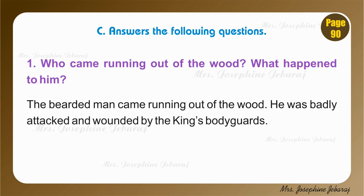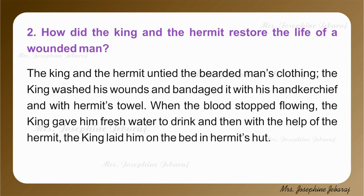Moving to C. Answer the following questions on page number 89. Question number 1. Who came running out of the wood? What happened to him? The bearded man came running out of the wood. He was badly attacked and wounded by the king's bodyguards. Question number 2. How did the king and the hermit restore the life of the wounded man? The king and the hermit untied the bearded man's clothing. The king washed his wounds and bandaged them with his handkerchief and with the hermit's towel. When the blood stopped flowing, the king gave him fresh water to drink and, with the help of the hermit, laid him on the bed in the hermit's hut. Thus they restored the life of the wounded man.